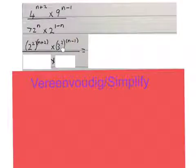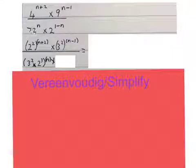Prime factorize the 9 becomes 3 squared in a bracket and put those guys in brackets too. Prime factorize the 72, it will become 3 squared times 2 to the power of 3 in brackets, and that guy in brackets too, and keep 2 to the power of 1 minus n as it was.